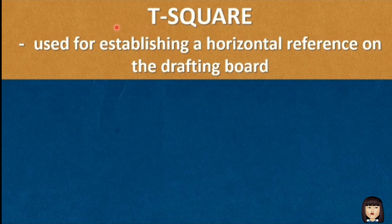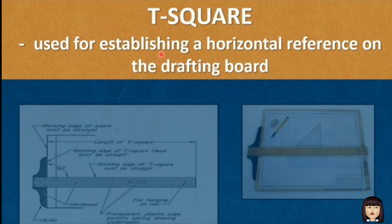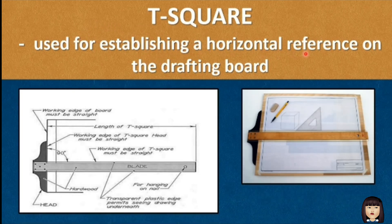The t-square is used for establishing a horizontal reference on the drawing board. As you can see in the picture, this is the drawing board with the t-square attached to it. The head of the t-square rests against the board's edge, and the blade of the t-square passes through the drawing area.